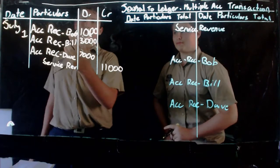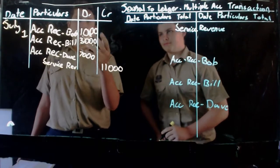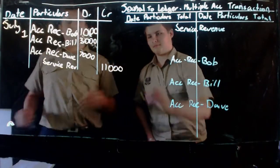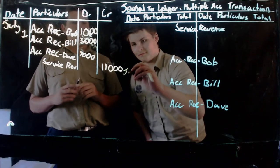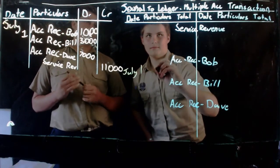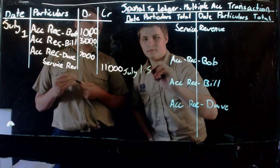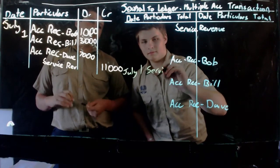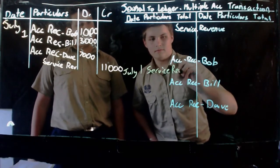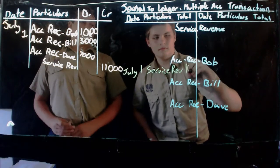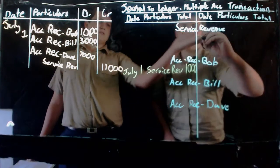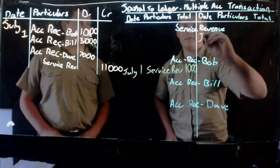First of all, we have accounts receivable for Bob for a thousand dollars, so that'll be written here. Then we need to have a corresponding amount for a thousand dollars in the service revenue account.